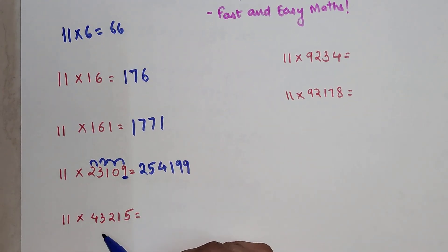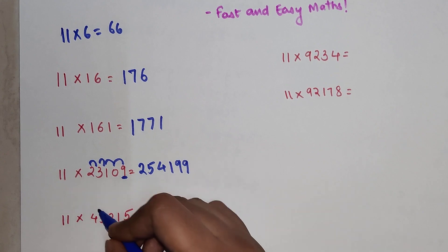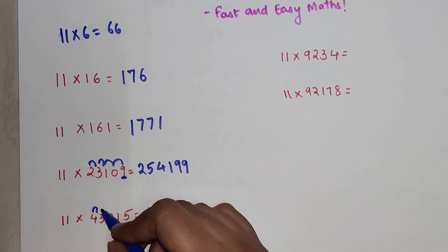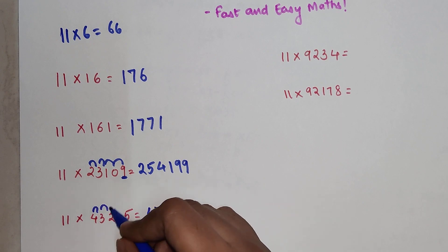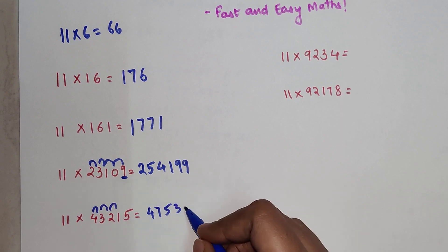So now, 11 into 43215: again 4, 4 plus 3 is 7, 3 plus 2 is 5, 2 plus 1 is 3, and 1 plus 5 is 6, and then again 5.